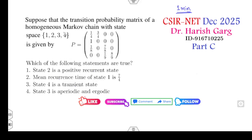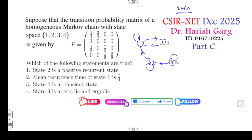Now look at the next question on classification. There are 4 states. The transitions are: 1 to 1 and 1 to 2; 2 to 1; 3 to 1 and 3 to 3; 4 to 3 and 4 to 4. States 1 and 2 form a closed communicating class. Once you leave state 3, you cannot return to it — so state 3 is a transient state. Similarly, once you leave state 4, you cannot return — so state 4 is also a transient state.